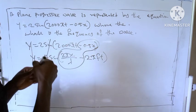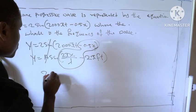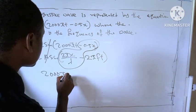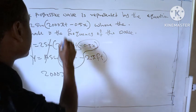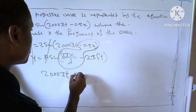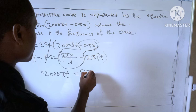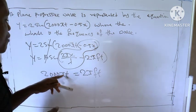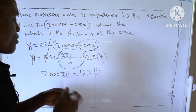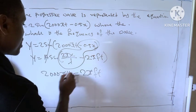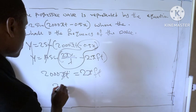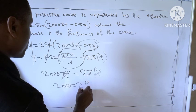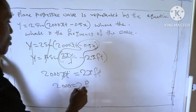So what is left is 2000πt = 2πft. So here we have π here, we have π here, we have t, t, so π cancel π, t cancel t. So we are left with 2000 = 2f. We are calculating for frequency.